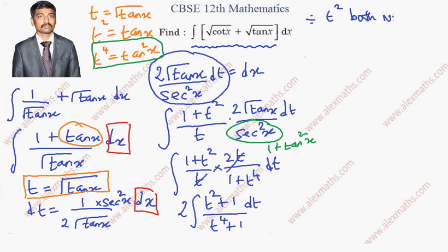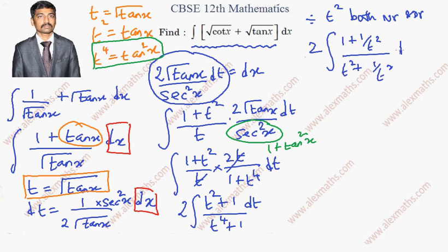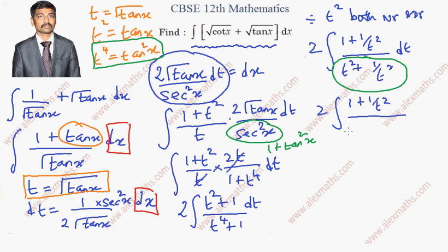Dividing numerator and denominator by t², we get 2∫(1 + 1/t²) / (t² + 1/t²) dt. For the denominator, I'm going to use an algebraic identity — I'll first copy the numerator as is, divided by (t − 1/t)² + 2.